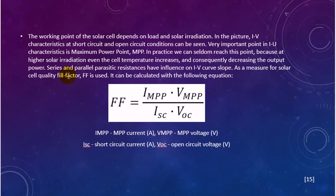The working point. The working point of the solar cell depends on load and solar irradiation. In the picture, characteristics at short circuit and open circuit conditions can be seen. A very important point in the characteristic is the maximal power point, MPP. In practice we can seldom reach this point because at higher solar radiation, the cell temperature increases and consequently the output power decreases. Series and parallel parasitic resistances have influence on IV curve slope. As a measure for solar cell quality, fill factor FF is used. It can be calculated with the following equation.